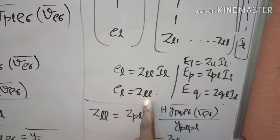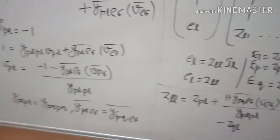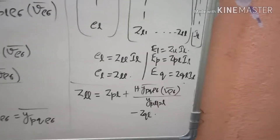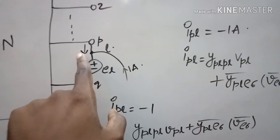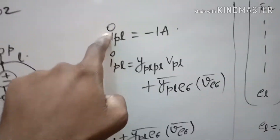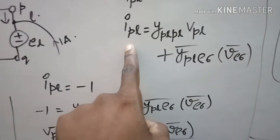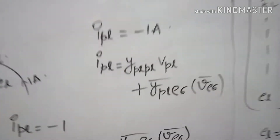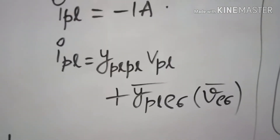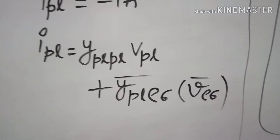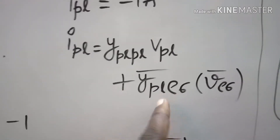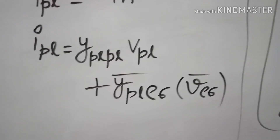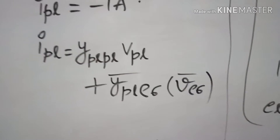If I want to know the diagonal element Z_ll, I should know el. In order to find el or Z_ll, we need to go to the primitive network equations. As I injected one ampere at the lth node, the current from p to l — i_pl — is the incoming current, and since these two are opposite in direction, we get i_pl as minus one ampere. i_pl equals y_pl_pl into v_pl, where y_pl_pl is the self admittance of the element between node p and node l, and y_pl_rho_sigma_bar is the mutual admittance between the added element pl and the remaining elements of the partial network.